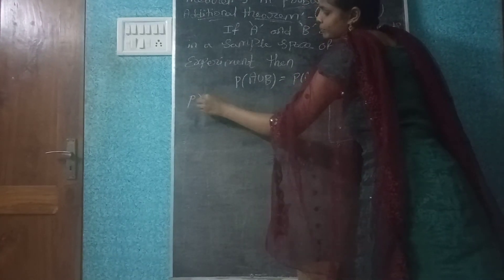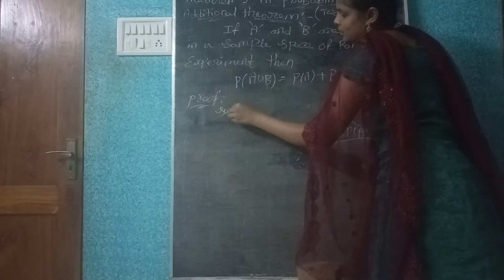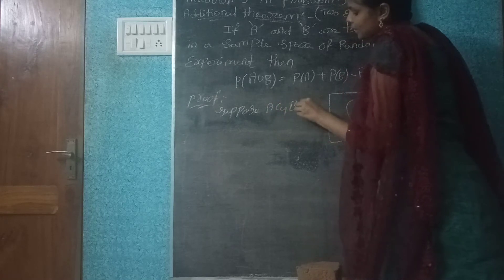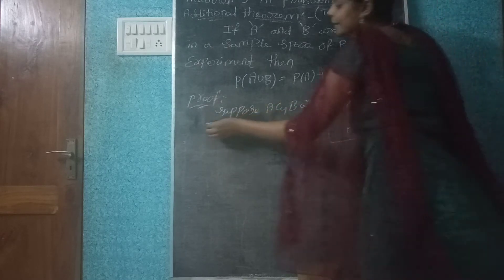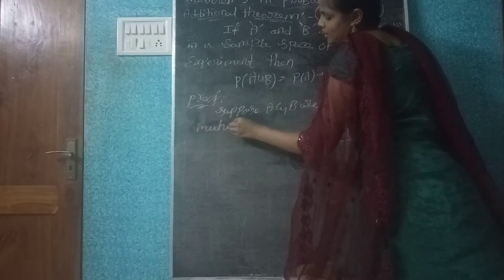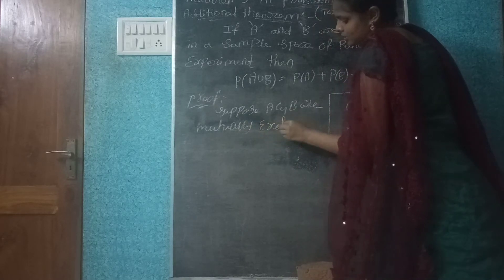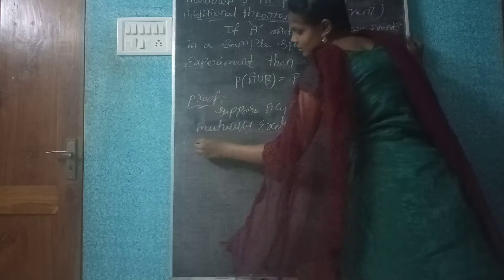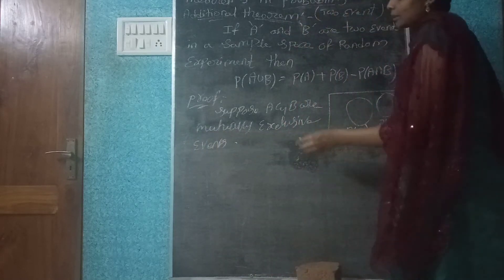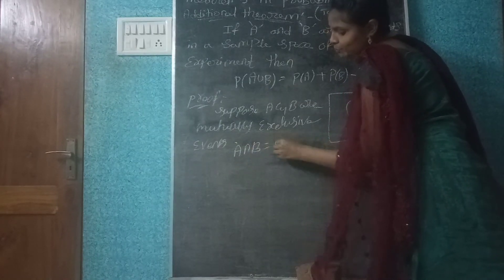Proof. Suppose A and B are mutually exclusive events. Mutually exclusive events, then A intersection B is equal to phi.